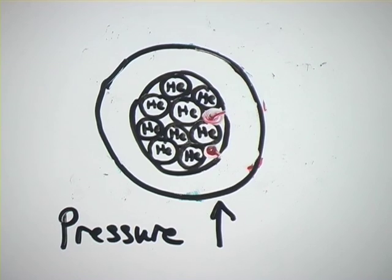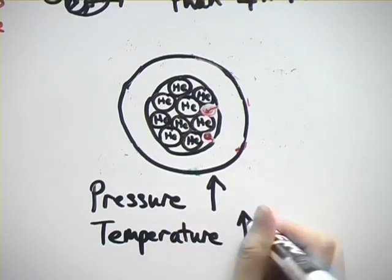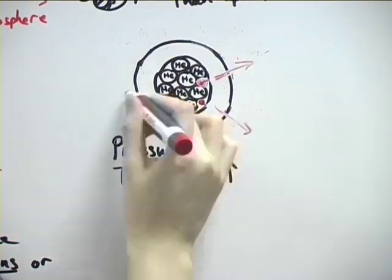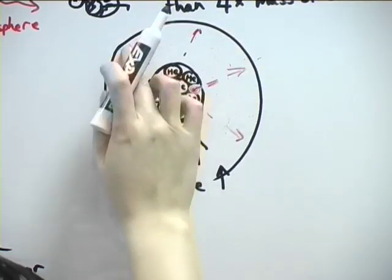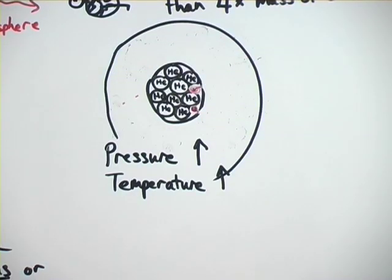As before, this makes the temperature and pressure increase. The temporary heat creates outward pressure again and counteracts the inward force of gravity, pushing the outer layers of the star outwards.